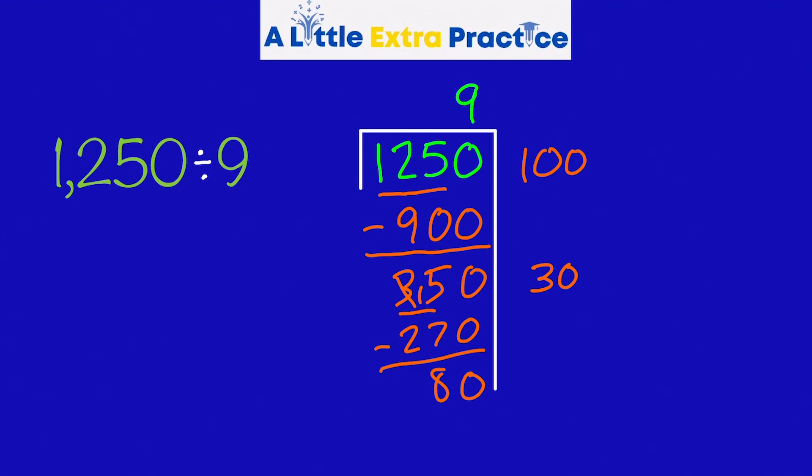What times 9 is almost 80? Well, 9 times 9 is too big. So I better settle for 9 times 8, which is 72. Subtract. We have another 8. But this 8 is the remainder. So let me add these up. 130 plus 8, 138, remainder 8.